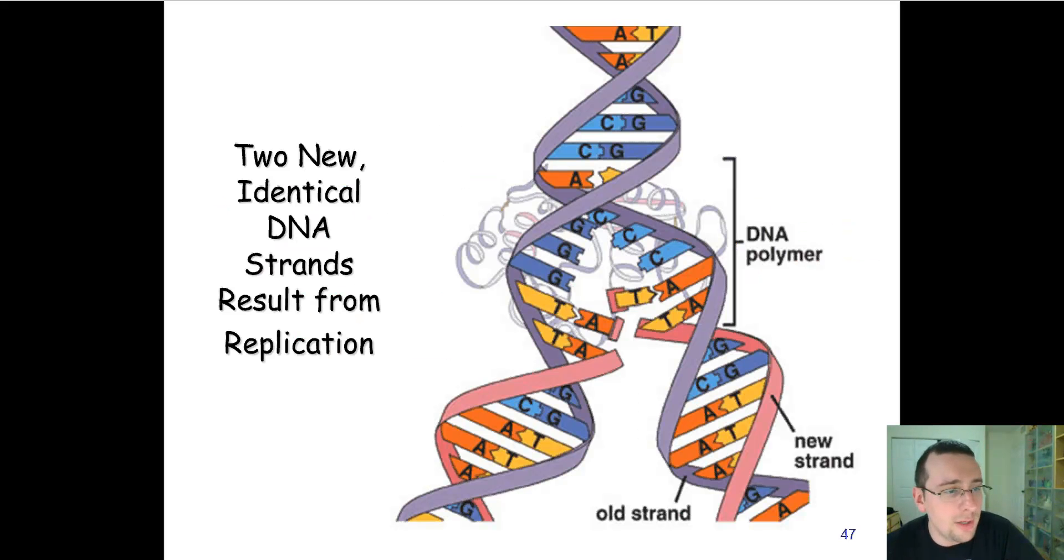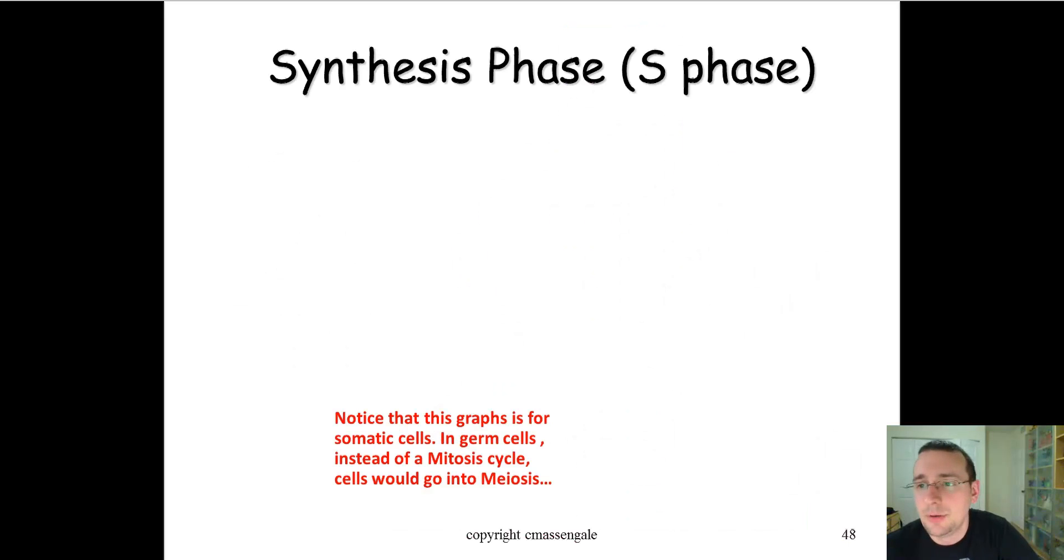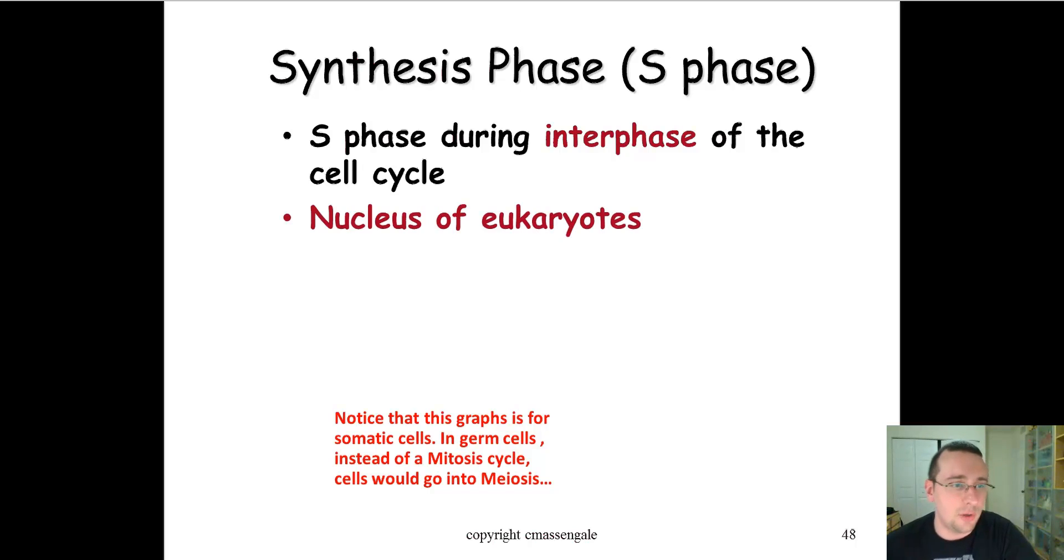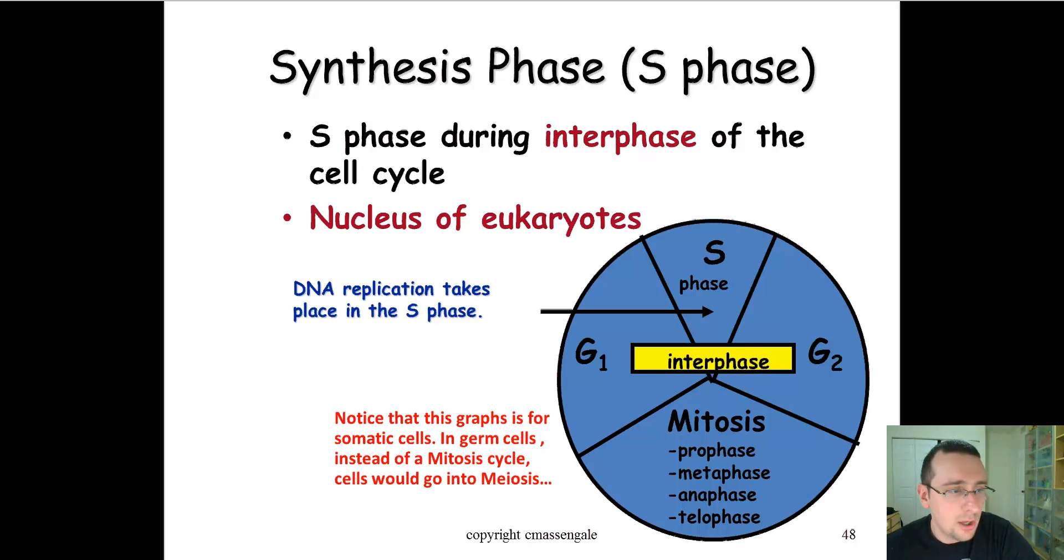So the point of replication is to create two identical copies of the DNA polymer. And to do so, you basically unzip the molecule, and each of the strands of the old polymer serves as the template for the formation of a new strand, as you see here. How did this actually happen? Through the help of several proteins, which I just mentioned. And this will happen during the S phase of the interphase of the cell cycle, especially in the nucleus of eukaryotes.